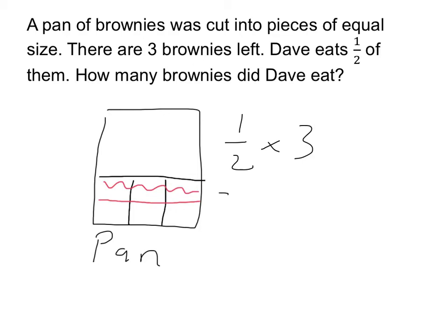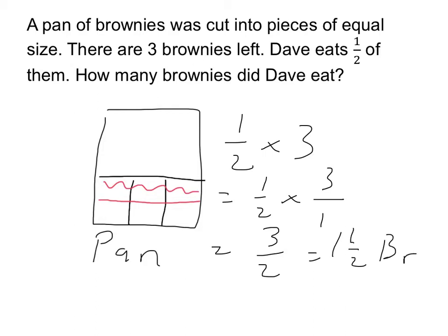To do this arithmetic, we can think of this as one-half times three over one. We do this arithmetic to get three-halves, which equals one and a half brownies.